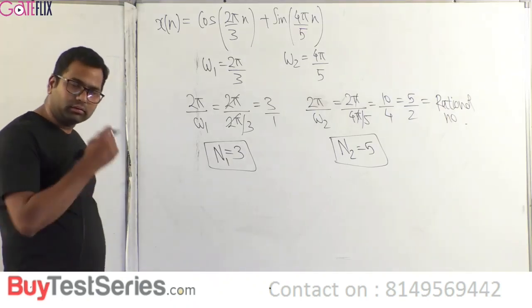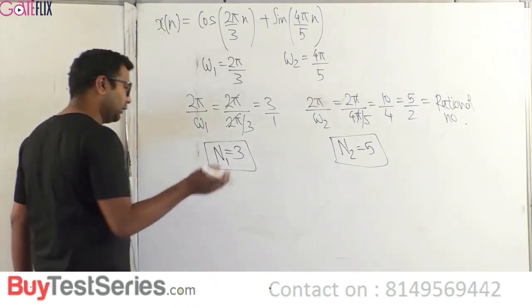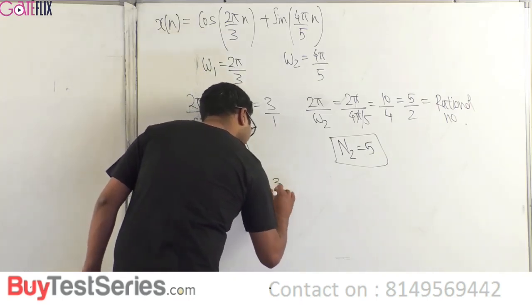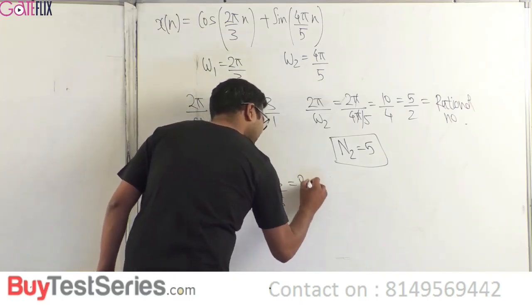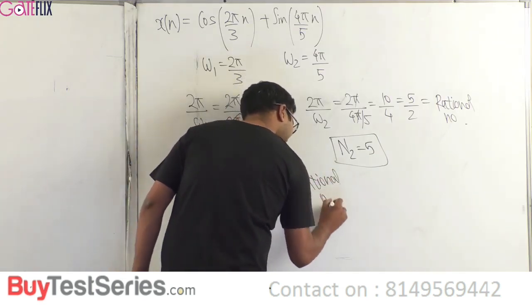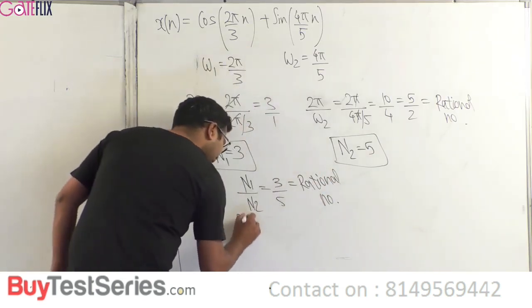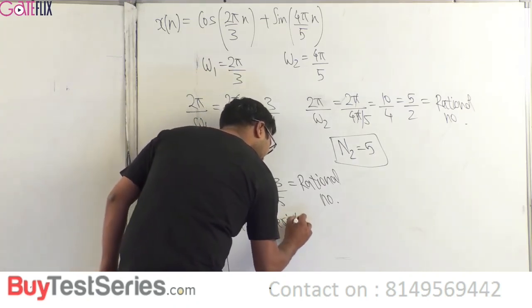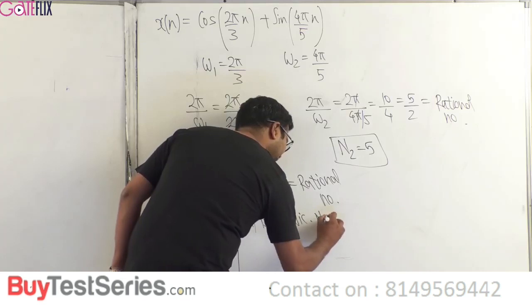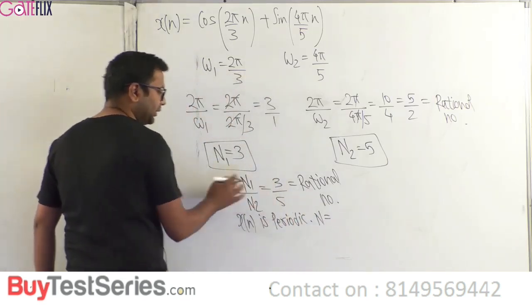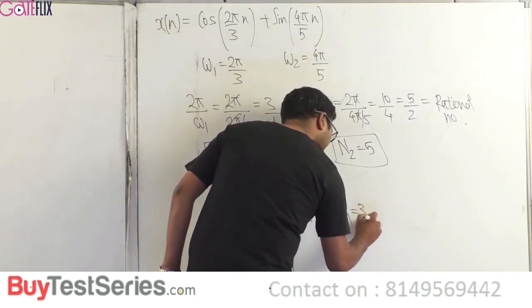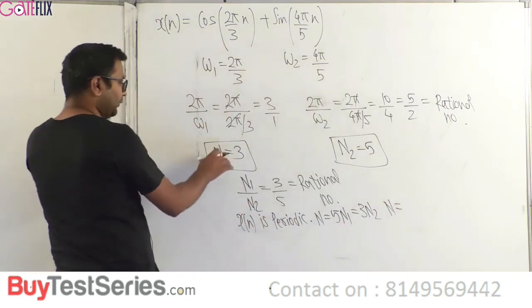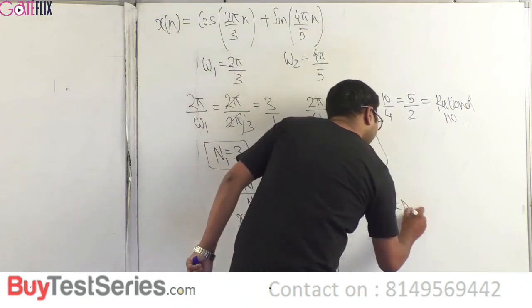To find the period of x(n), we take ratio N1/N2 = 3/5, which is a rational number. So x(n) is periodic. The period N is found by cross-multiplication — taking 5×N1 gives capital N = 5×3 = 15.